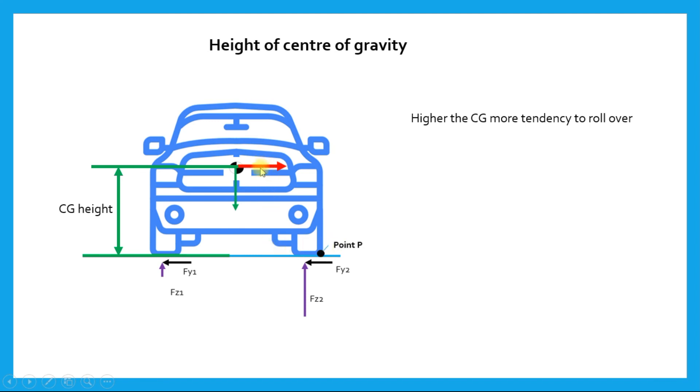Because moment is force times distance. Here the force is the centrifugal force and the distance is the CG height. So force times distance causes moment. Higher the CG height, higher is the moment.